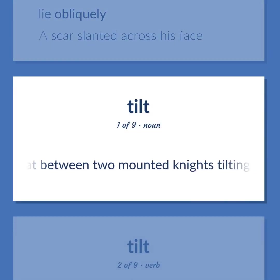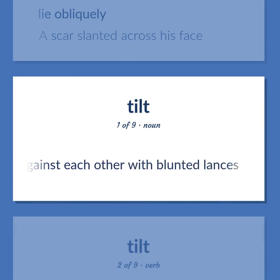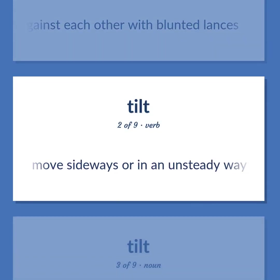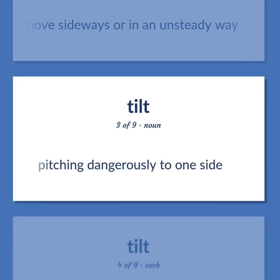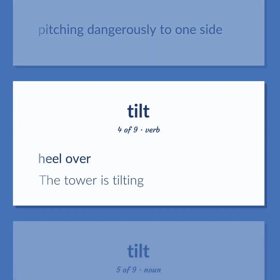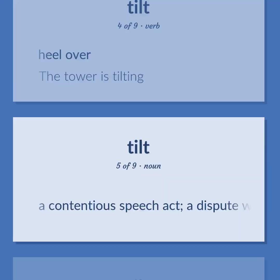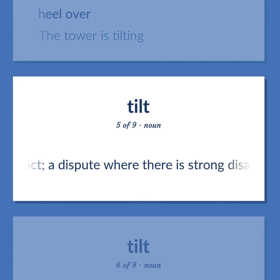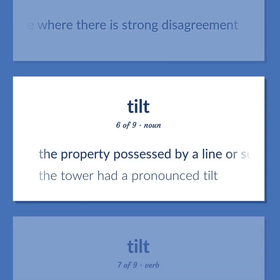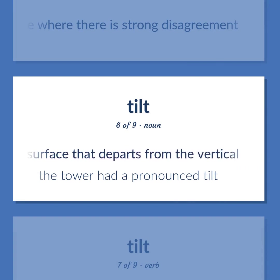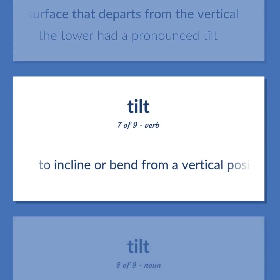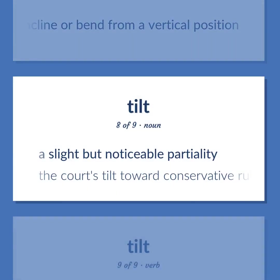TILT: A combat between two mounted knights tilting against each other with blunted lances. Move sideways or in an unsteady way. Pitching dangerously to one side. Heel over — the tower is tilting. A contentious speech act; a dispute where there is strong disagreement. The property possessed by a line or surface that departs from the vertical — the tower had a pronounced tilt. To incline or bend from a vertical position. A slight but noticeable partiality — the courts tilt toward conservative rulings.